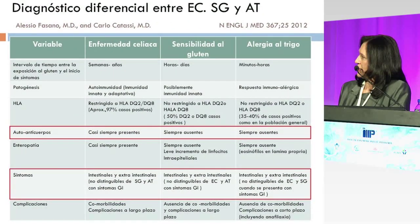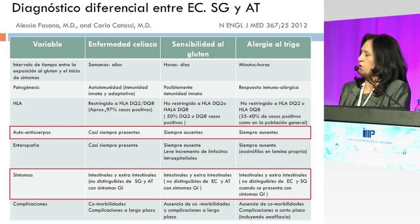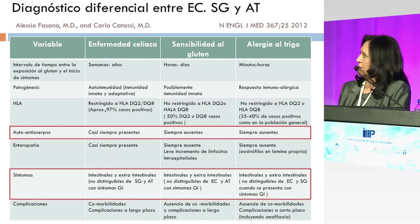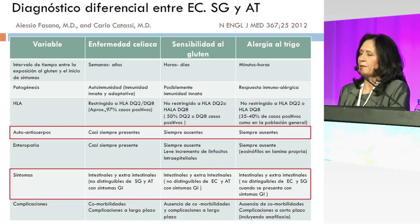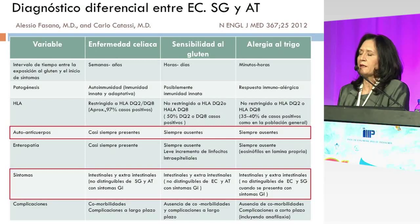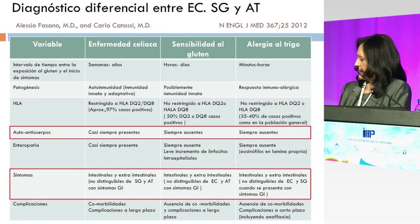En este cuadro les quiero mostrar cómo los síntomas pueden solaparse entre los pacientes de enfermedad celíaca, sensibilidad al gluten y alergia al trigo. La ayuda básicamente va a estar dada por los anticuerpos, que van a estar presentes casi siempre en los pacientes con enfermedad celíaca y vamos a encontrarlos ausentes en los pacientes que tienen sensibilidad al gluten o alergia al trigo.